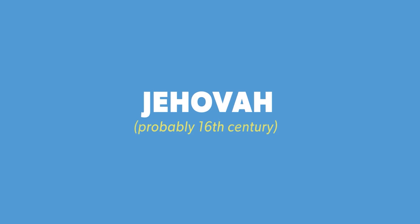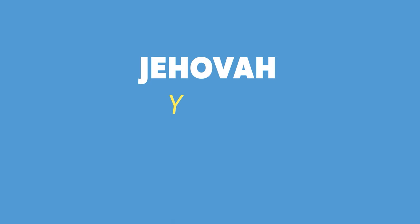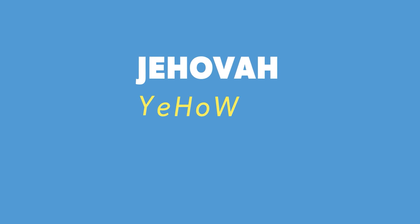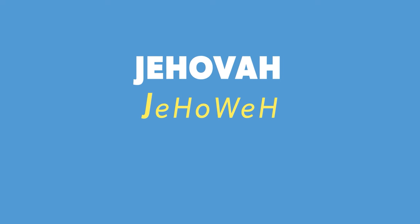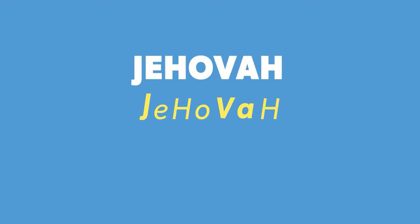Jehovah is actually a much later variant. The word Jehovah comes from a three-syllable version of YHWH: Y-E-H-O-W-E-H. The Y was replaced with J, although Hebrew does not have a J sound, and the W with the V, plus the extra vowel in the middle, resulting in Jehovah.